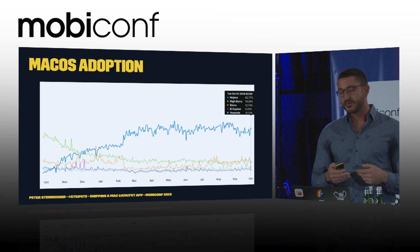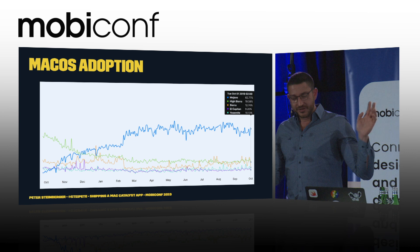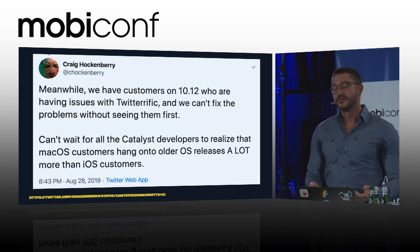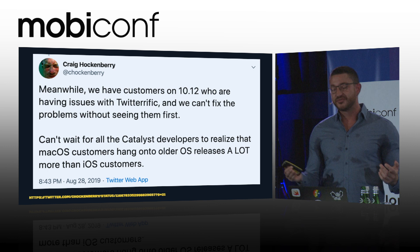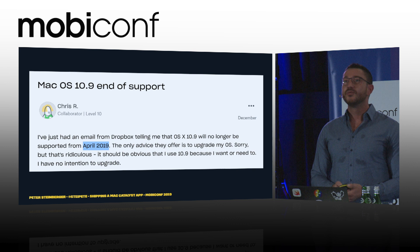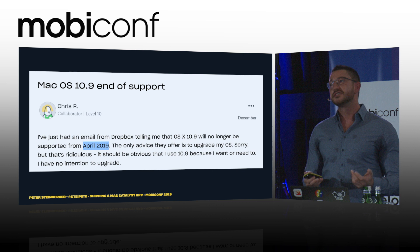Updating your Mac is more risky — apps break more easily — and especially Catalina will be interesting because it completely removed support for 32-bit apps. You can always use Electron, which still supports back to macOS 10.10, the equivalent of iOS 8. This will be a problem for adoption, as other long-term Mac developers like Craig Hockenberry confirm, writing that he can't wait for all those Catalyst developers to realize that macOS customers hang on to older OS releases a lot more than iOS customers.